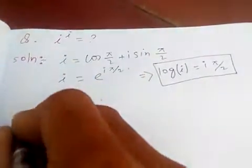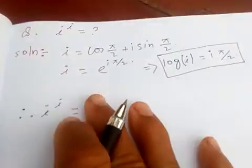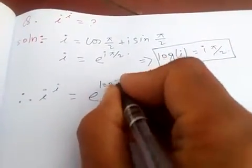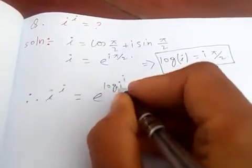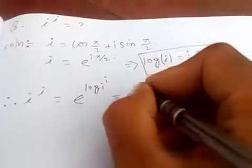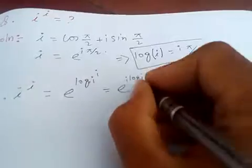Therefore, i to the i is the same as e to the log of i to the i, where the base is e. And e to the, we know log i to the i is i log i, which is e to the i times log i.